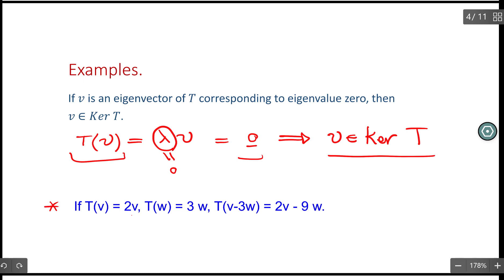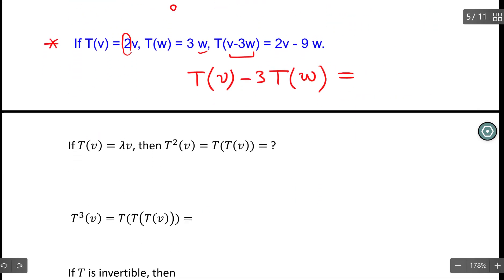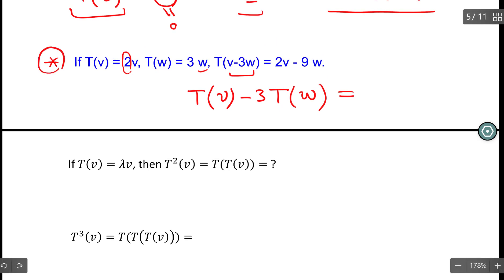Let's also look at this example. If v is an eigenvector corresponding to eigenvalue two, and w is an eigenvector corresponding to eigenvalue three, then this linear combination of v and w is given. Action of T on v minus 3w can be decomposed because T is linear, and this can be very easily understood. The point I want to highlight is that given a linear combination of eigenvectors, action of T on these linear combinations can be very easily expressed. And we will discuss in the part about diagonalizability how important this property is.